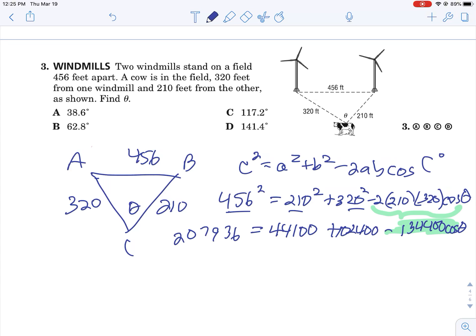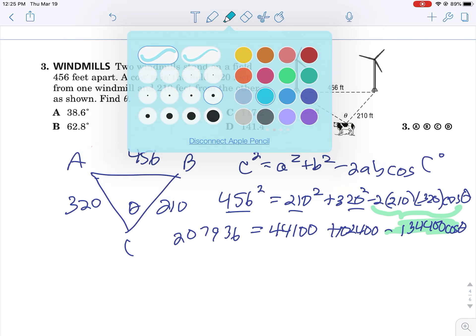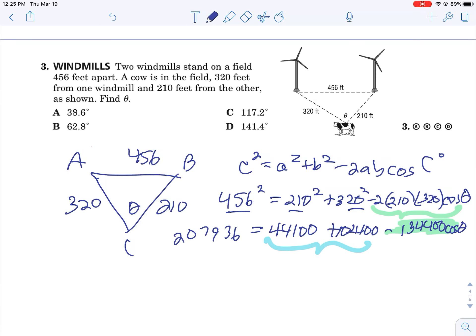Now do not subtract this. You can't. You must combine these two, then subtract it from both sides. You're going to end up with 61,436 equals negative 134,400 cosine of theta.